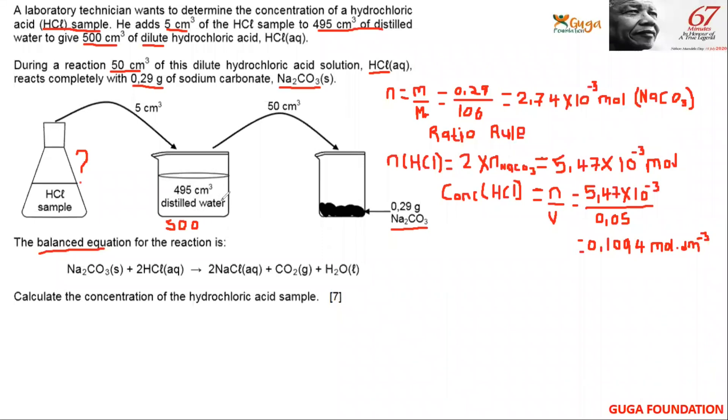So now here we had 500 centimeter cubed, and we want to determine the concentration of the concentrated HCl. So now we use a dilution line. We use a dilution line, which is n of dilution equals n of concentrated. The number of moles, amount of substance, will remain constant, but only the volume will change. The amount of substance or number of moles will remain the same.